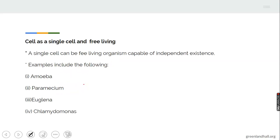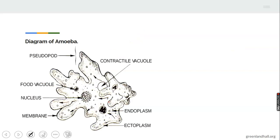Cell as a single cell and free living organism. A single cell can be free living, that is independent and capable of independent existence. It can exist on its own. Example of a free living organism. Now there we have the diagram of a free living organism, amoeba.